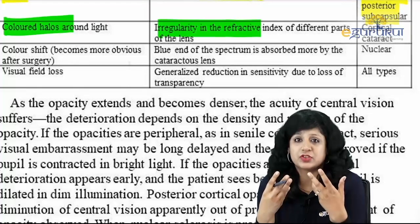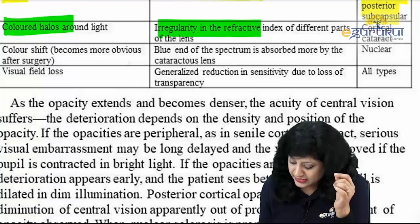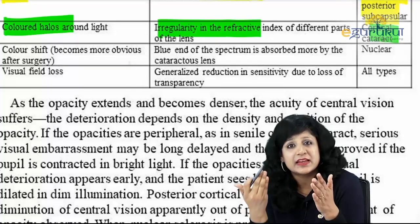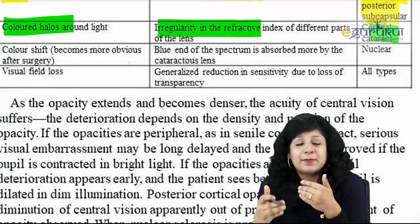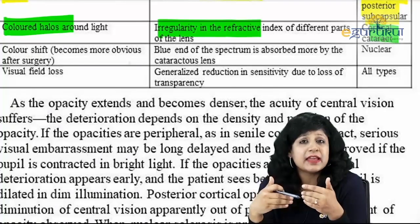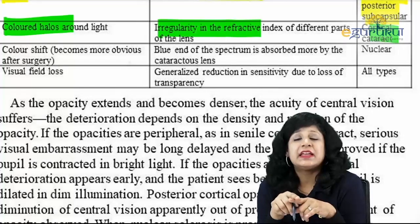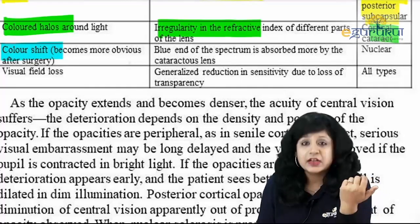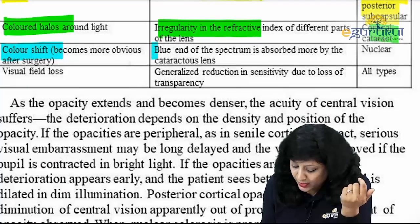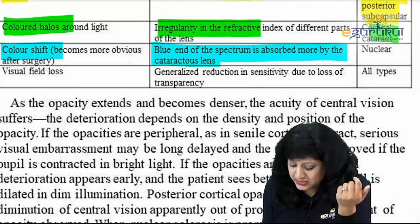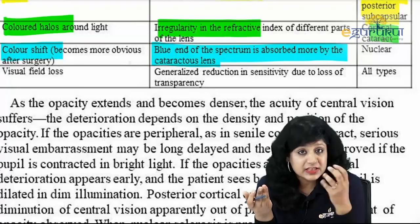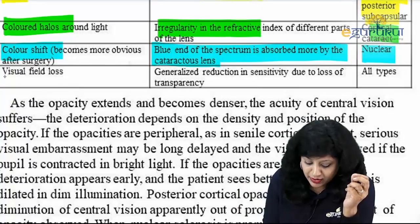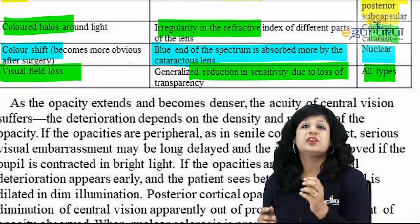Colored halos are due to irregularity of the refractive index, especially water droplets from hydration causing scattering of light — this is again cortical cataract. You should differentiate between colored halos and color shift. Colored halos are colored rings around a bright light. Color shift becomes more obvious after surgery — the blue end of the spectrum is absorbed more by the cataractous lens, so after surgery there is a sudden shift. Color shift is more common in nuclear cataract.